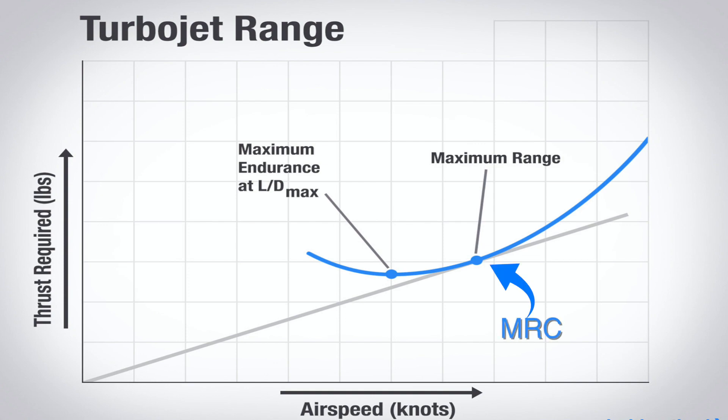So your best range speed with a thrust producing engine is faster than your minimum drag speed. The minimum drag speed is called L/D max, or maximum endurance. It's where the induced drag equals parasite drag.